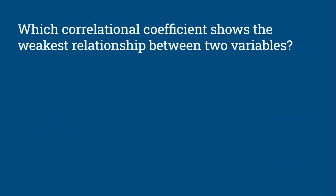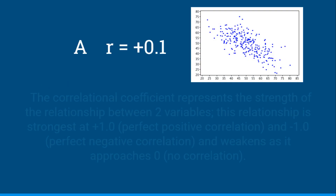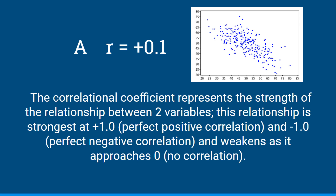Which correlational coefficient shows the weakest relationship between two variables? Would it be r = +0.1, r = +0.7, r = -0.6, r = -0.9, or r = +0.4? The weakest relationship would be r = +0.1. The correlational coefficient represents the strength of the relationship between two variables. It's strongest at +1 (perfect positive correlation) and equally strong at -1 (perfect negative correlation), getting weaker as it approaches 0 in either direction. So we look for the answer closest to 0, which is +0.1.